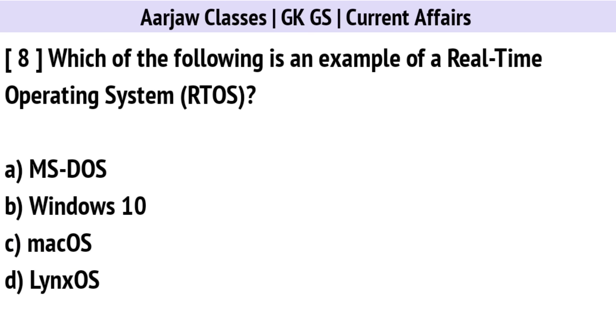Which of the following is an example of a real-time operating system? The correct option is D: Linux OS.